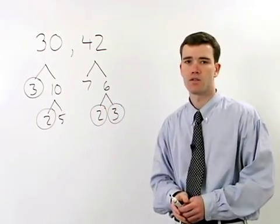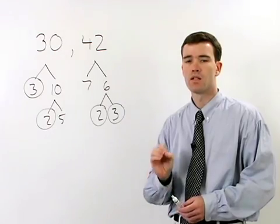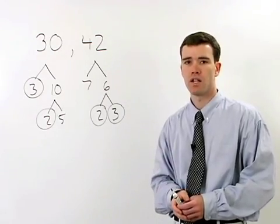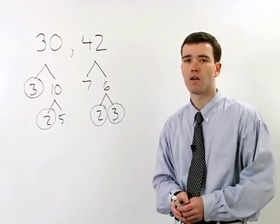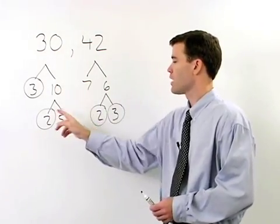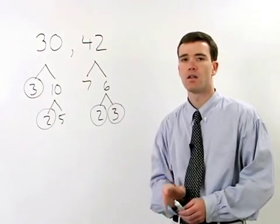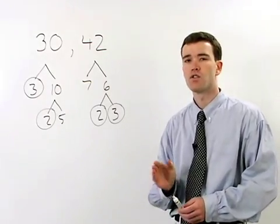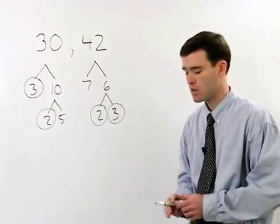Once you've found the factors that match up, simply multiply those factors together to get the greatest common factor of the two numbers. Since the 3s match up and the 2s match up, the greatest common factor is 3 times 2, or 6.